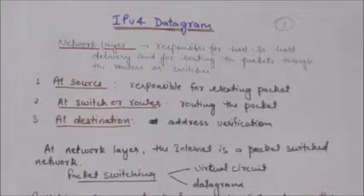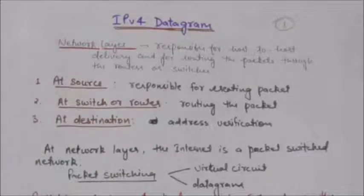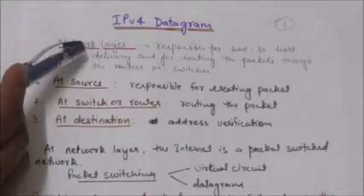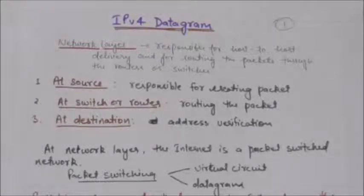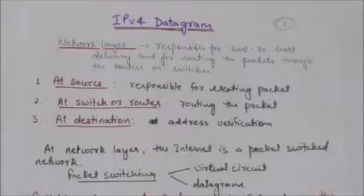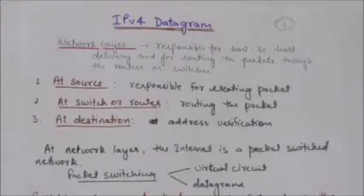Hello friends, welcome back. In this tutorial we will study about IPv4 datagram. As we have already studied in a previous tutorial, the network layer is responsible for host-to-host delivery. This network layer is also responsible for routing the packets through the routers or switches. At the source, the network layer is responsible for creating a packet from the data coming from another protocol like the transport layer protocol.